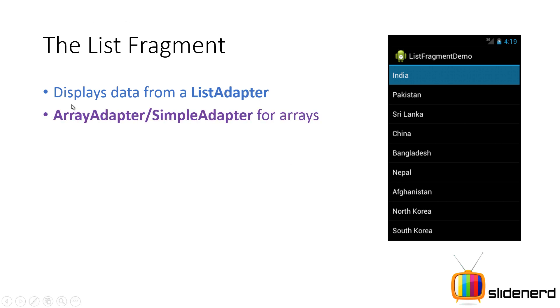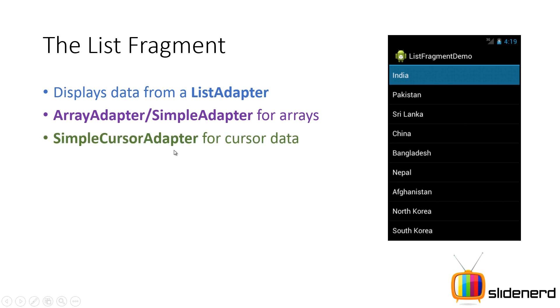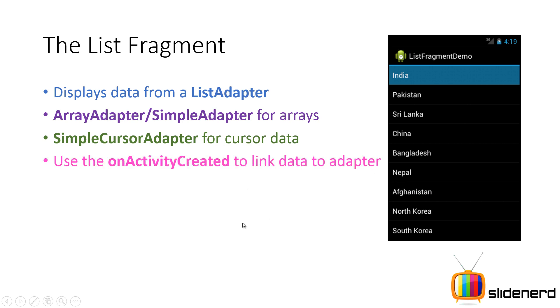ArrayAdapter or the SimpleAdapter is a class that you can use for arrays, and you can use the SimpleCursorAdapter class for reading data from a cursor. Use the onActivityCreated method to link the data to the adapter and create the appearance.